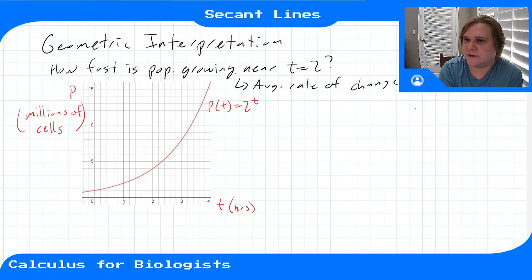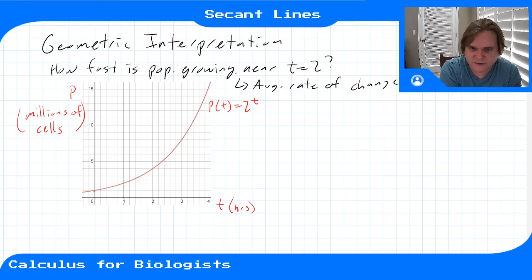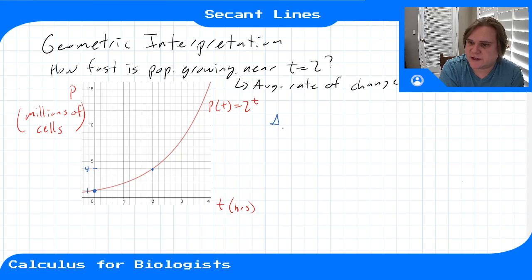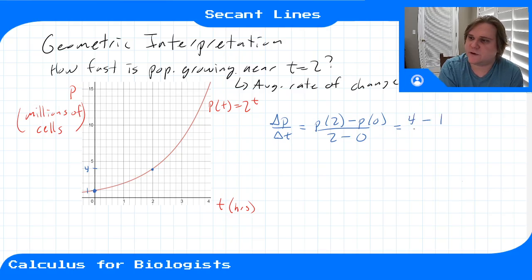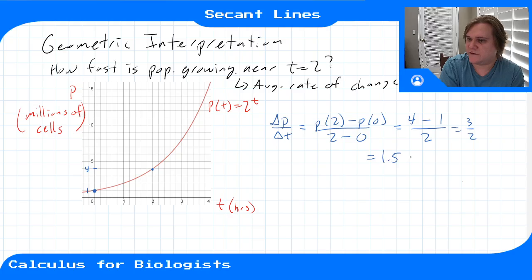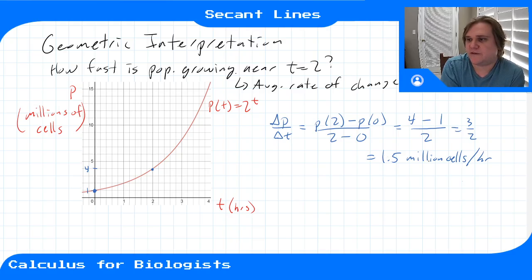I need to grab those points — here's zero, here's time. The average rate of change is delta p over delta t: population at time two minus population at time zero, over time two minus time zero. Population at time two was four, population at time zero is one, time interval is two hours, so this is three over two, or 1.5 million cells per hour on average.